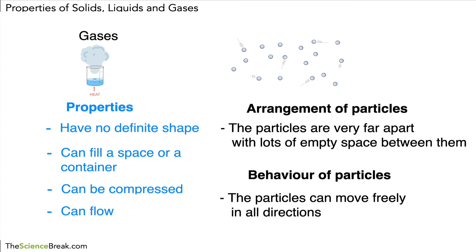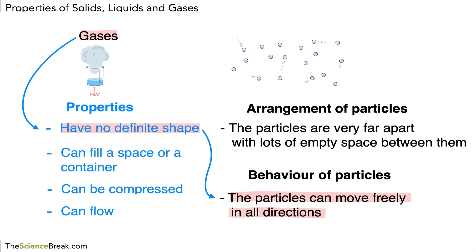So gases have no definite shape — why is that? It's because the particles can move freely and in all directions. That's how you would construct a sentence to explain the properties in terms of the behavior of particles. Remember to always use the word 'because' to link the property to the particle behavior.